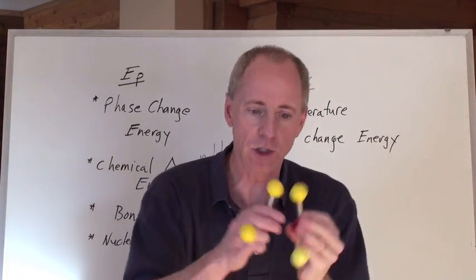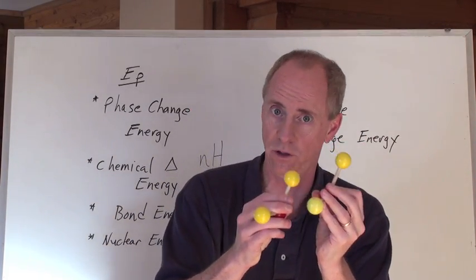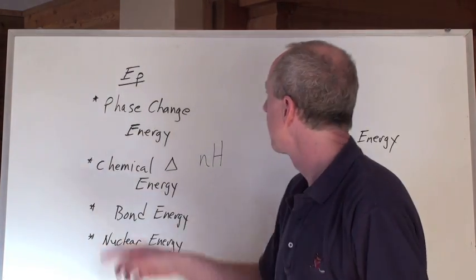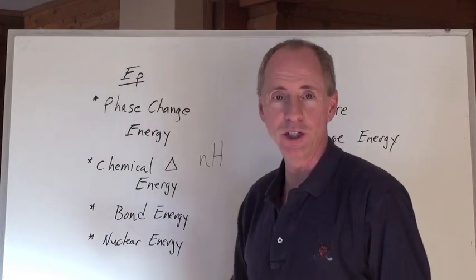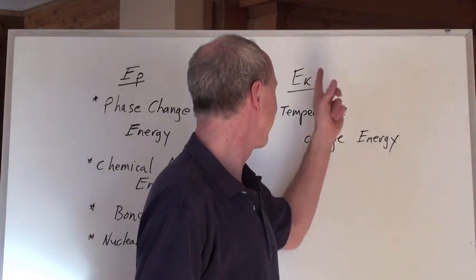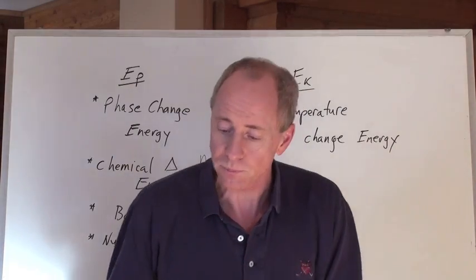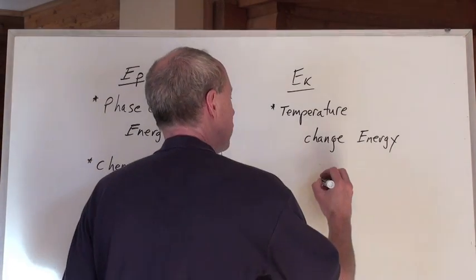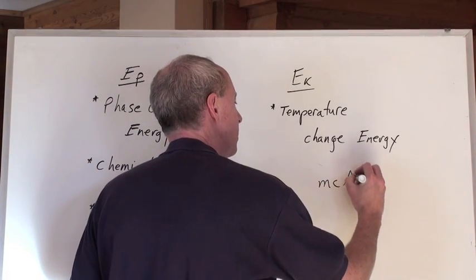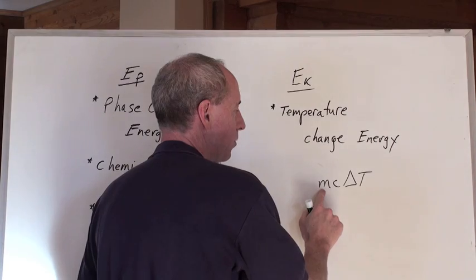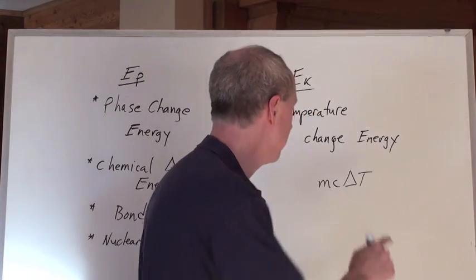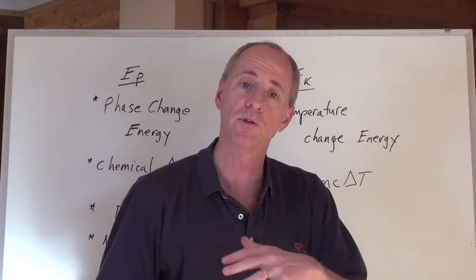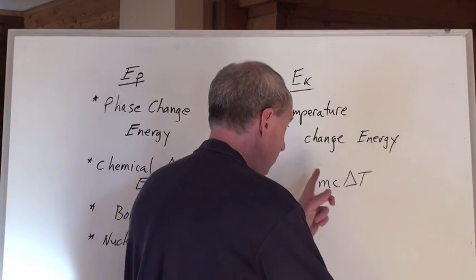Temperature change means the molecules are moving faster — higher temperature — or slower, which is lower temperature. Temperature and kinetic energy go together; phase and potential go together. For a temperature change formula, we've got MC delta T, where the mass of the substance times its specific heat capacity times the temperature change equals the amount of energy that is either absorbed or released during a temperature change.